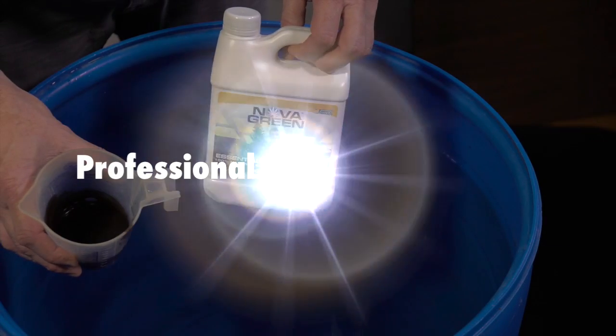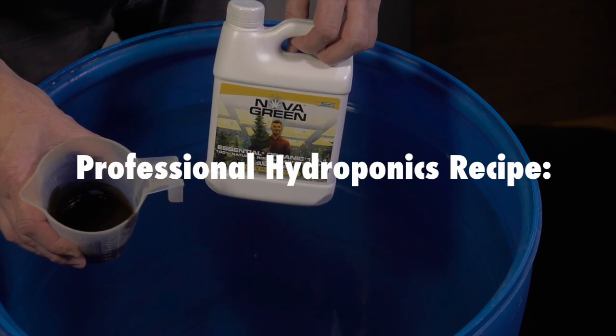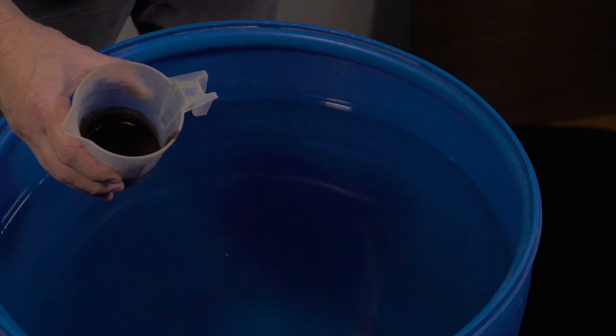The first item we're adding into the Pro-Mix is the Essentials Organic, and that is at two mils per gallon. So we've got a hundred mils here in this container.